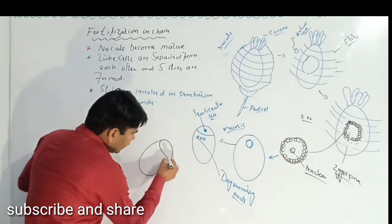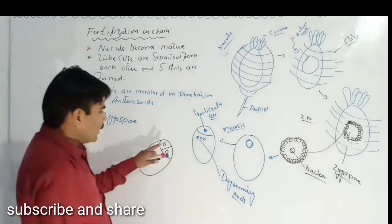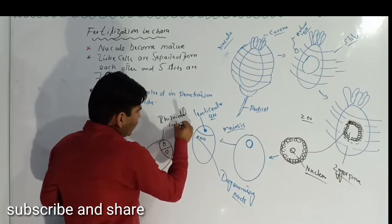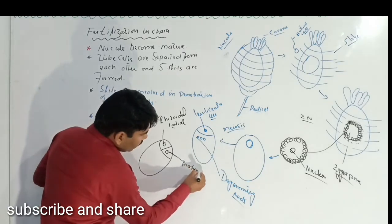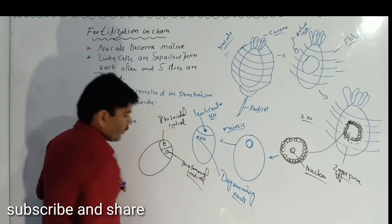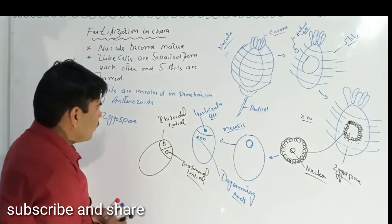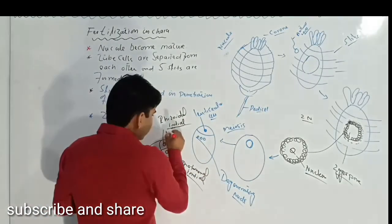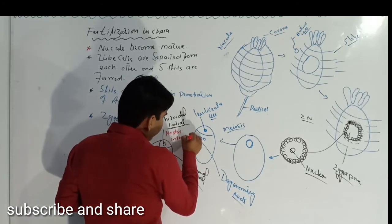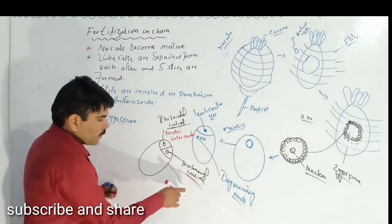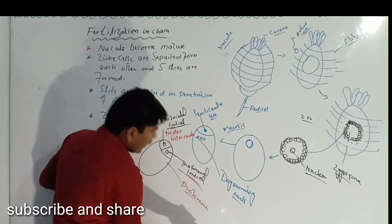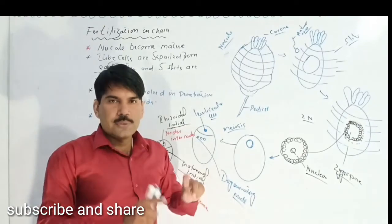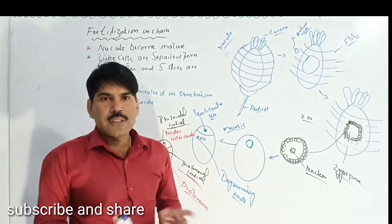The rhizoidal initial will grow and give rise to nodes and internodes. The protonemial initial will grow and produce the protonema. After further growth, it will become a new plant of Chara. So in this lecture we have studied about the fertilization as well as germination of Chara.